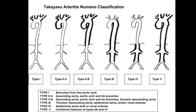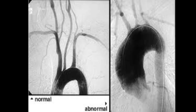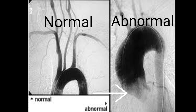These are the Numano classifications of Takayasu's arteritis — types 1 to 5 — with various patterns. On angiography you can see where the thinning of the vessel is, there is a cut-off, or there is decreased flow along the vessels. You can see an example of the normal and the abnormal angiographic appearance.